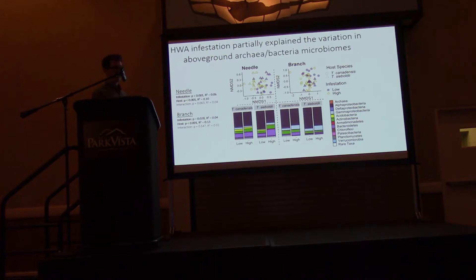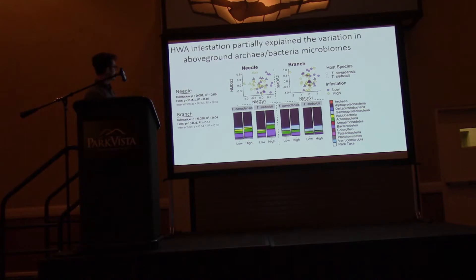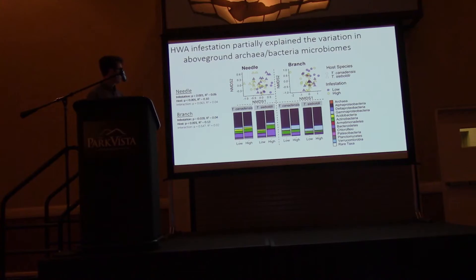Here I'm presenting the archaea and bacteria microbiome in the two above-ground plant tissues — the needle and the branch — using multivariate ordinations, where points closer together are more similar in community composition. There is a significant effect of hemlock woolly adelgid infestation in both the needle and the branch; however, it only explains four to six percent of the overall variation, so it's a really modest effect. There's also a host species effect, where the two different hemlock species have a different microbiome.